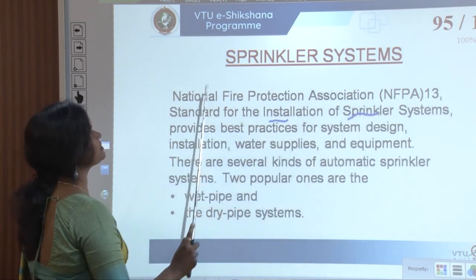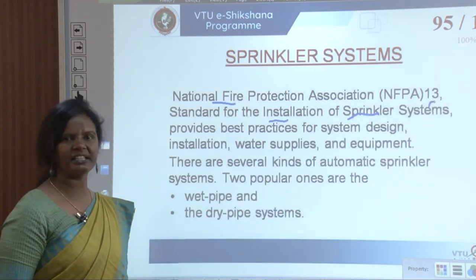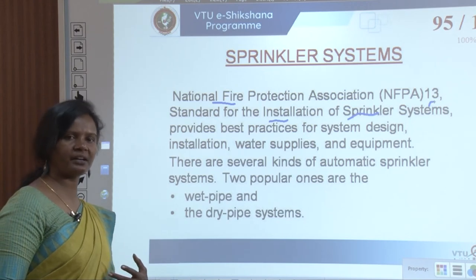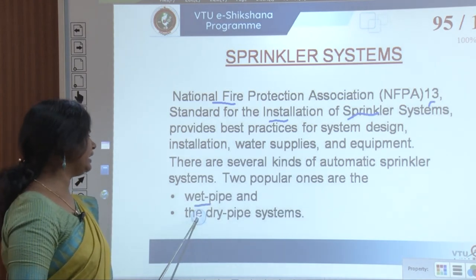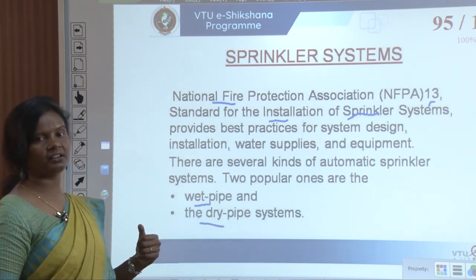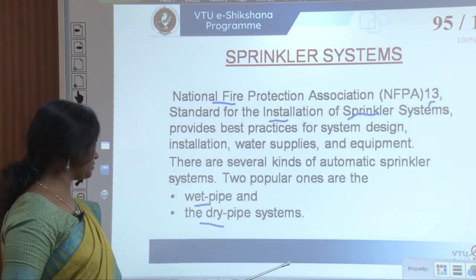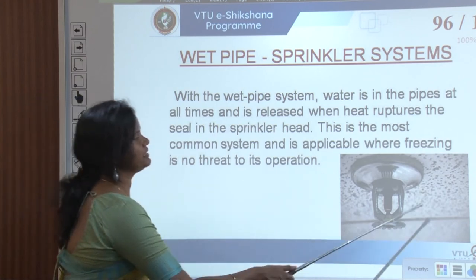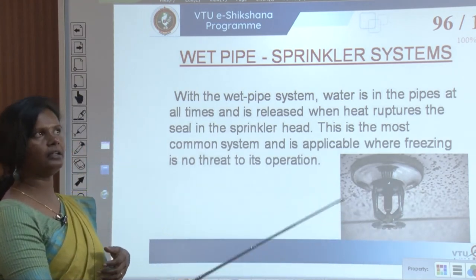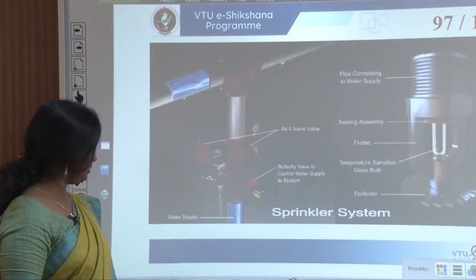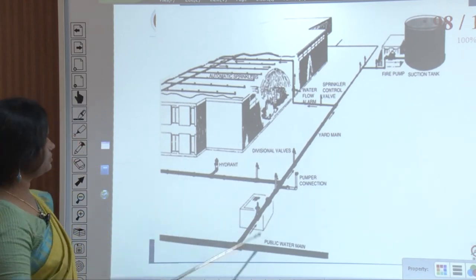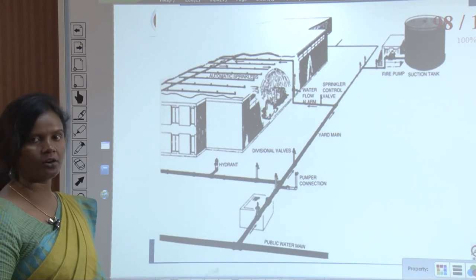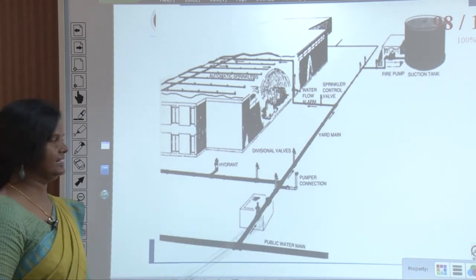For installation of sprinkler systems, NFPA 13 standard provides best practices for system design, installation, water supply, and equipment. There are several kinds of automatic sprinkler systems; two popular ones are wet pipe and dry pipe. In both types, a public water main feeds water to the system. The common idea is that water is taken from the public main into an on-site tank, with hydrants installed around the site.